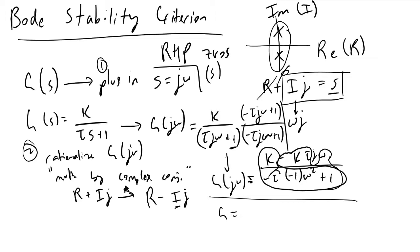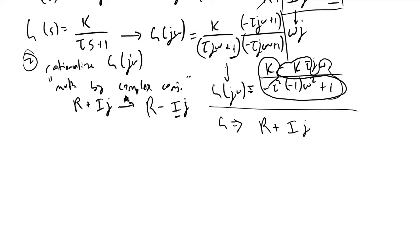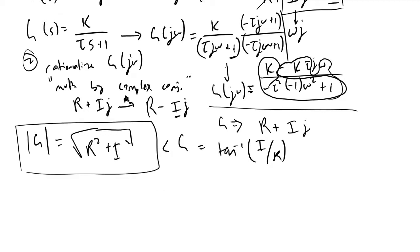As we recall from our previous frequency response analysis discussions, we can now determine what the magnitude of G is, or the amplitude ratio, which equals the square root of R squared plus I squared. And the phase lag or phase angle of G is equivalent to the inverse tangent of I over R.